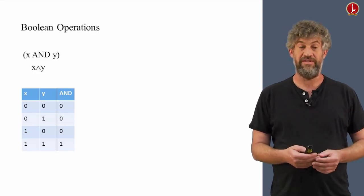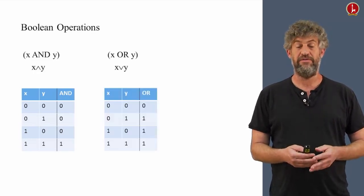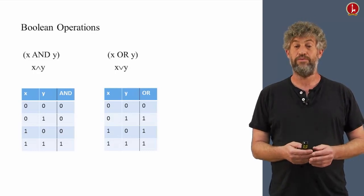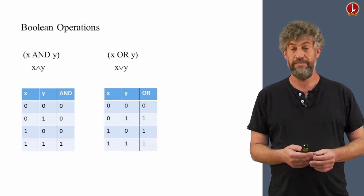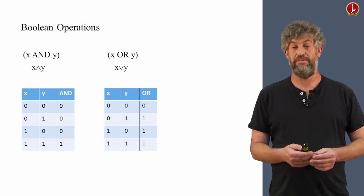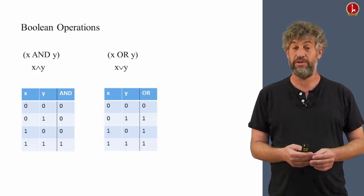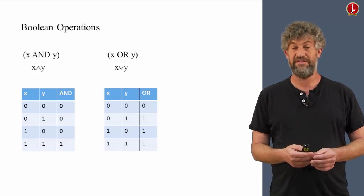AND is one of the possible operations. Here's another very popular one, OR. It returns one if any one of the two inputs is true, is one, or even if both of them are one. The only time it returns zero is if both x and y are zero.